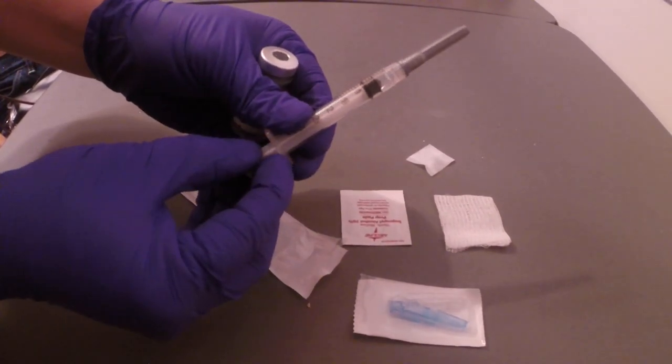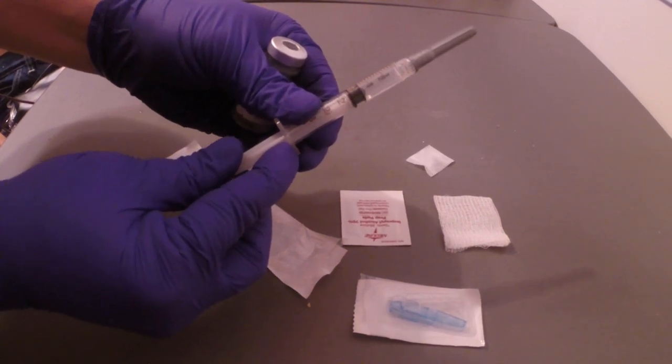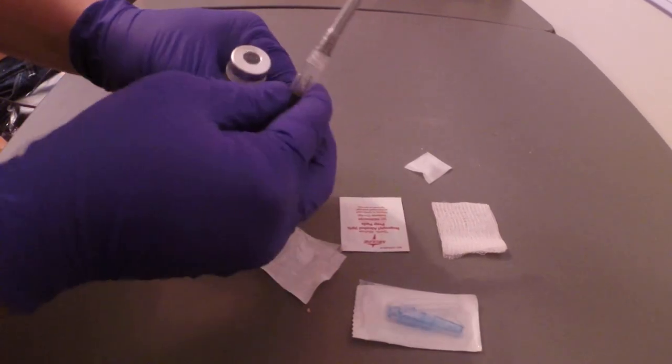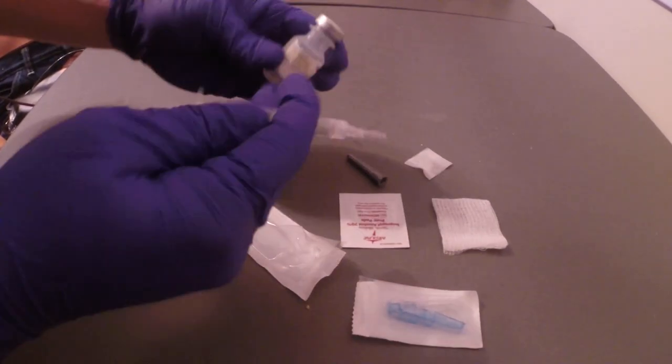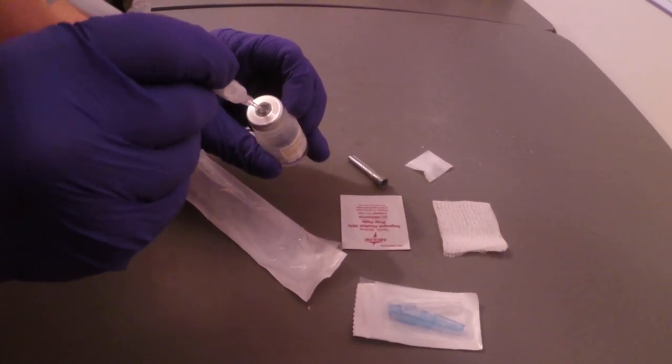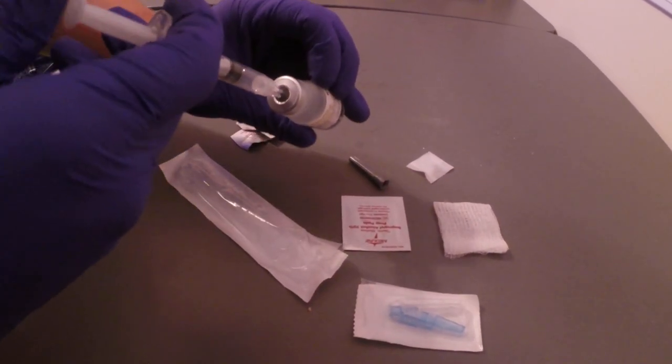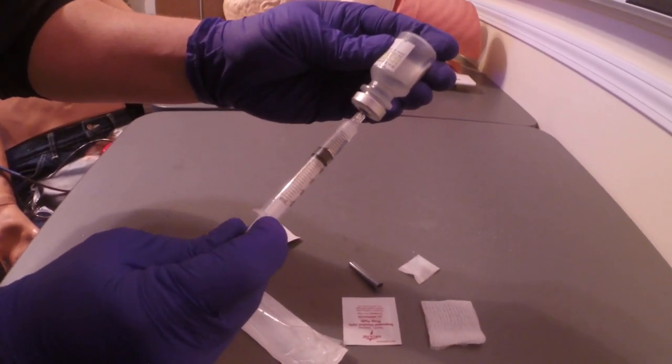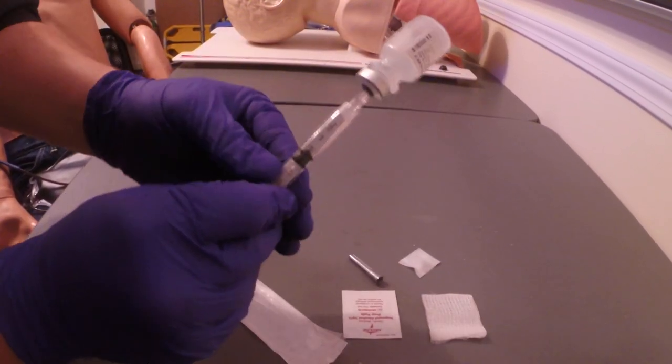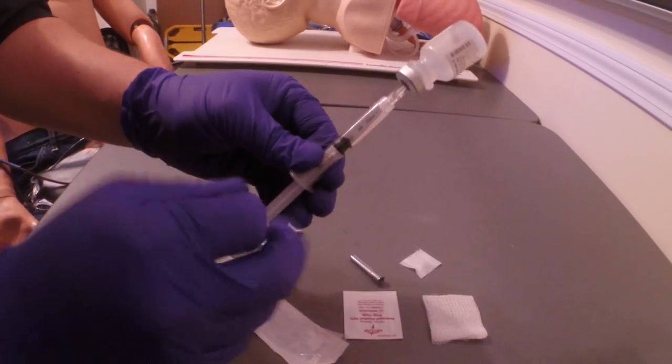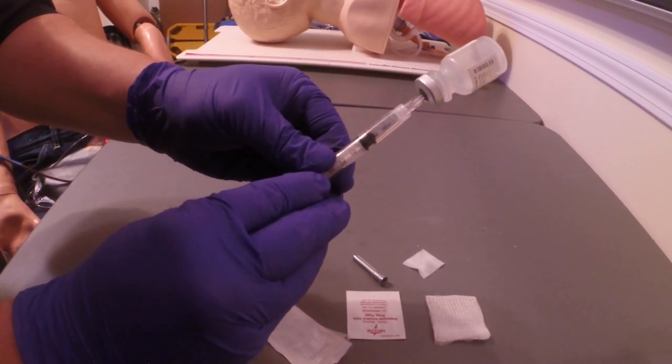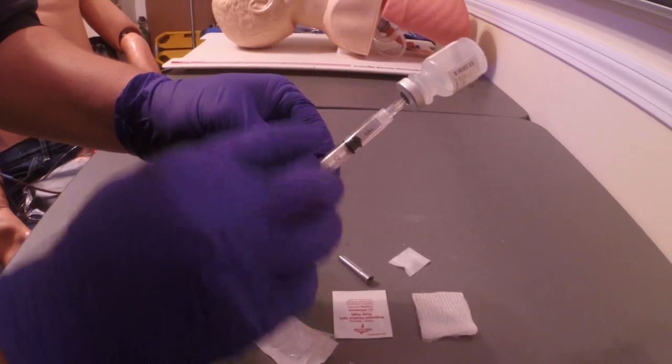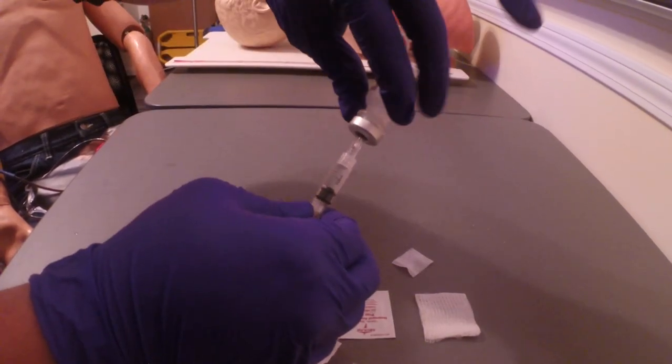Withdraw the amount of air into the syringe that we need for medication, which is 1 ml. So we'll push through the rubber, inject the 1 ml of air, and then withdraw 1 ml or 1 cc of fluid, tap out bubbles, push back up till you're level with the 1 cc.